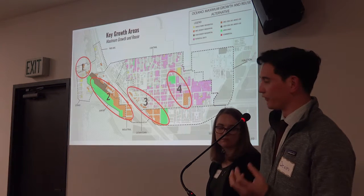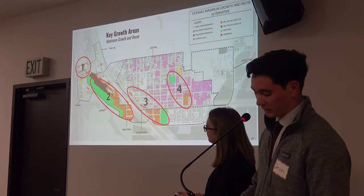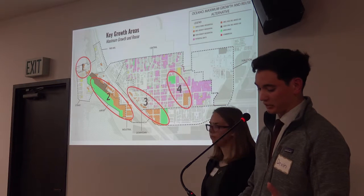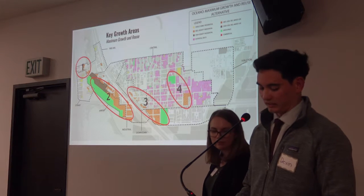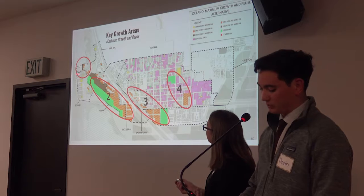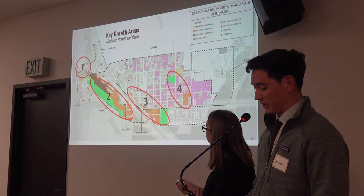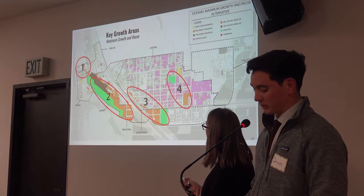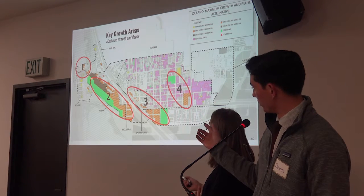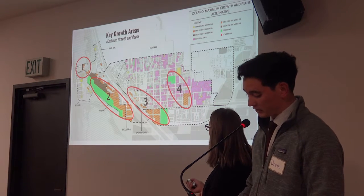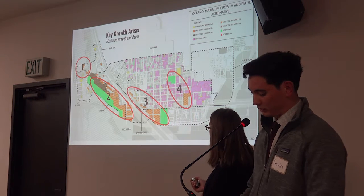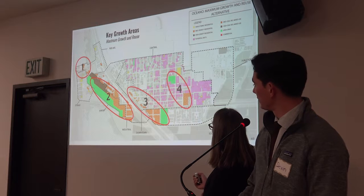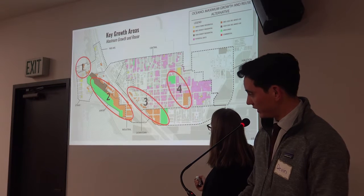In this alternative, there are four key growth areas. Some of these areas overlap the predefined neighborhood boundaries, but each offers a distinct vision. Peer Avenue provides potential development of underutilized lots. The airport and industrial neighborhoods have the largest potential for growth. The downtown and southern neighborhoods offer potential for mixed-use development, and Central Oceano provides infill of vacant parcels.